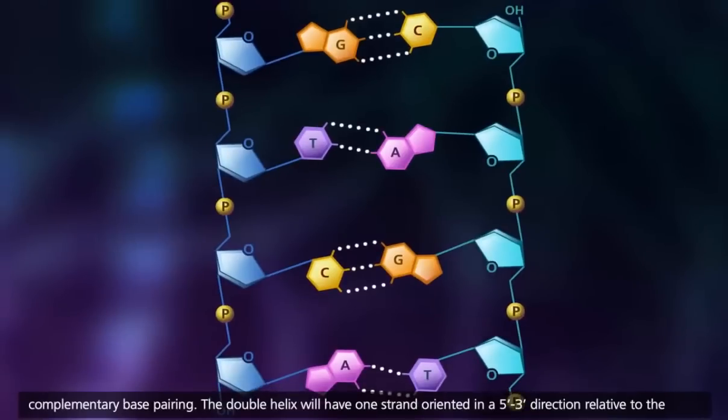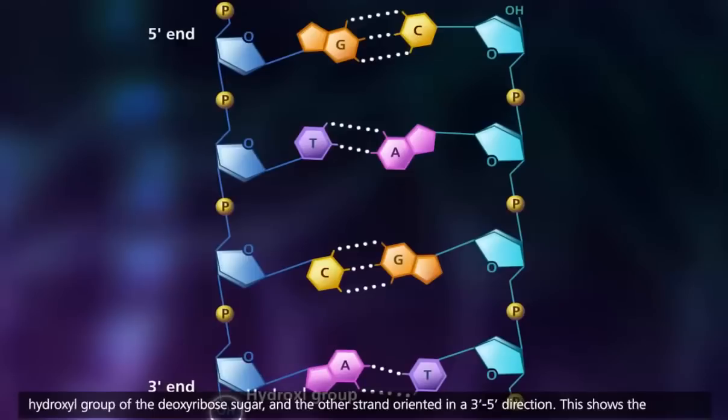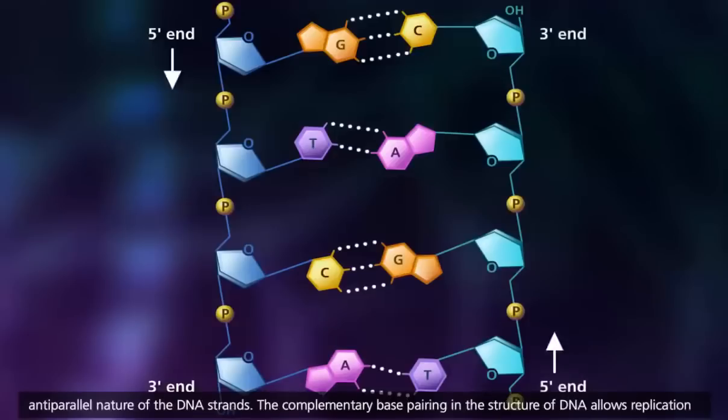The double helix will have one strand oriented in a 5' to 3' direction relative to the hydroxyl group of the deoxyribose sugar, and the other strand oriented in a 3' to 5' direction. This shows the anti-parallel nature of the DNA strands.